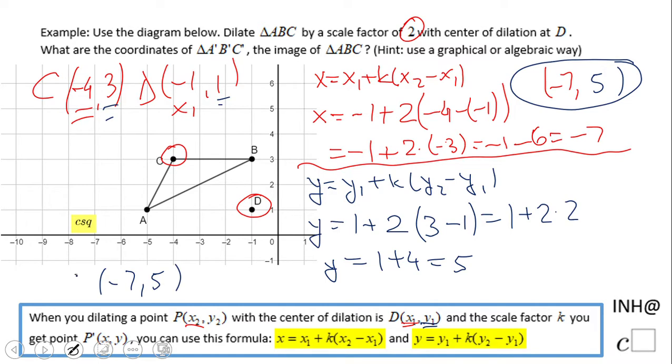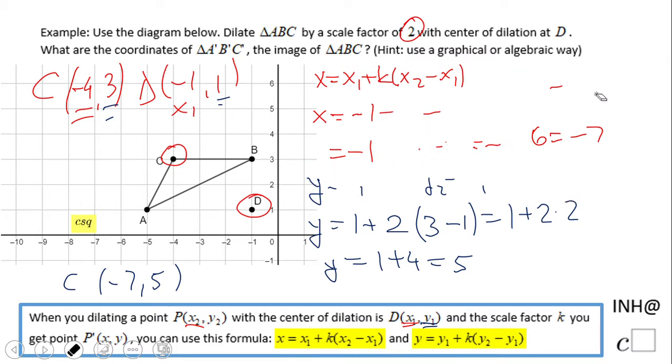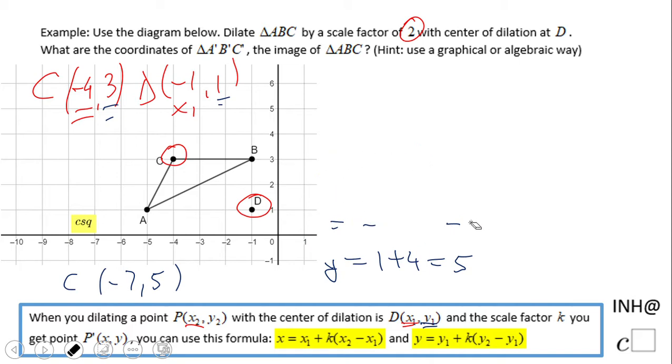Now I'm going to show you a graphical method. Let's erase this and look at the graphical approach. The graphical method is essentially counting, which is sometimes easier depending on the scale factor.